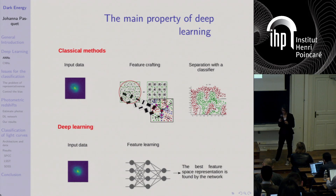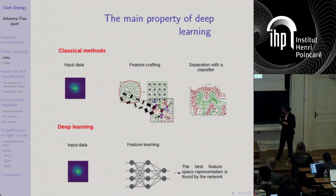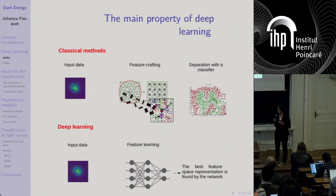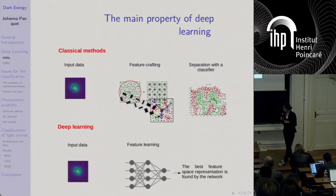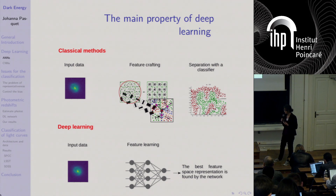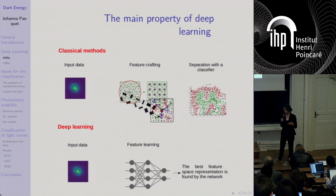To understand the efficiency of this method I need to define the difference between classical methods and deep learning. In classical methods you extract different features you consider important for a problem — for example fluxes, errors, colors — and these user-selected features are given to the classifier. In deep learning, the algorithm extracts by itself the best features for a given problem using convolution kernels, making it very specific and efficient.